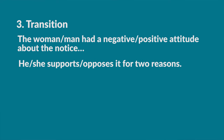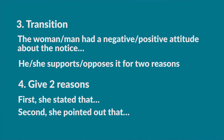Say 'the woman/man had a negative or positive attitude about the notice.' Then transition to why: 'he or she supports or opposes it for two reasons.' Notice we use the present tense — 'supports' or 'opposes' — not the past tense, because the student may still hold that opinion. This is the only place in this task where you use the present tense. After that, give the two reasons the student provides to support their opinion.